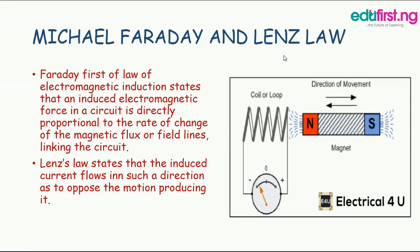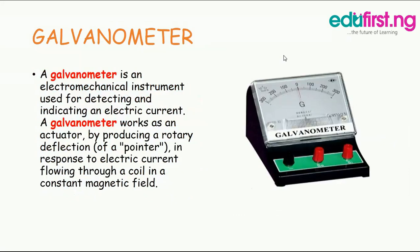We also have secondary or rechargeable batteries. These can be discharged and recharged multiple times using an applied electric current. The original composition of the electrodes can be restored by reverse current. Examples include the lead acid battery used in vehicles and lithium ion batteries used for portable electronics such as laptops and mobile phones.